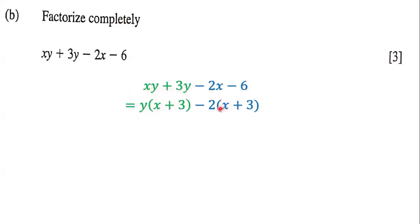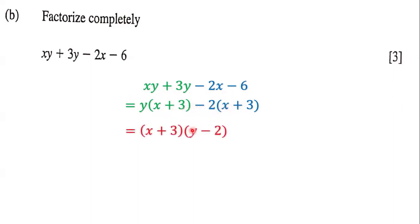This expression at the bottom is the factorized form of the expression at the top. Notice that we have x + 3 in this particular term and x + 3 is also in this particular term, which means x + 3 is the common factor of these two terms.